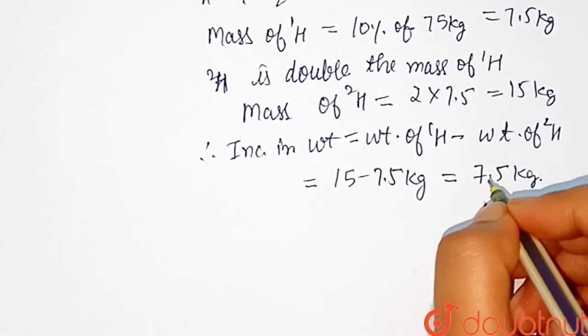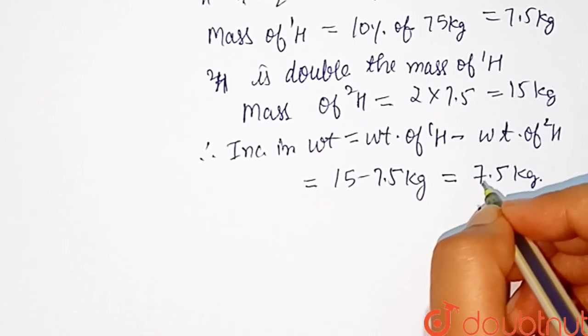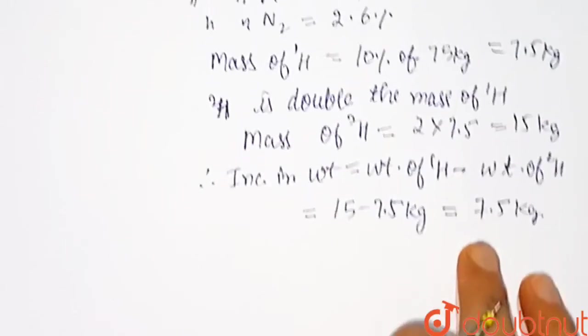Therefore, if all H1 are replaced by H2, the weight gained by the person is 7.5 kg. So option fourth is the correct answer.